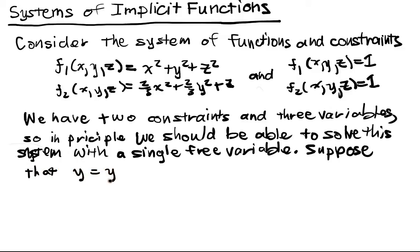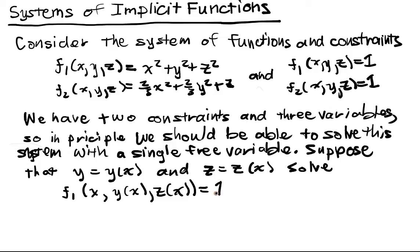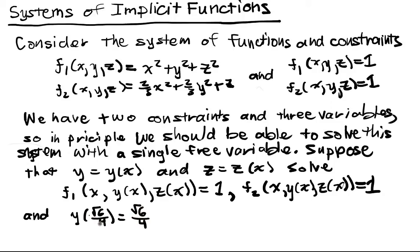We solve f₁(x, y(x), z(x)) = 1 for the first constraint, and f₂(x, y(x), z(x)) = 1. So I satisfy both of those. And y of √6/4 is equal to √6/4, and z at √6/4 is equal to 1/2.